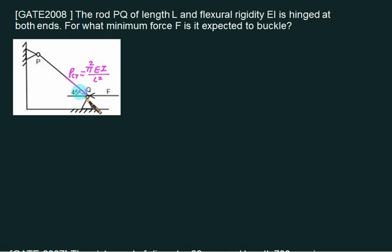The horizontal component of this one will be same as F. Is that component the cos component? So the value of F is simply Pcr multiplied by cos of 45, which is 1 by root 2. So this answer is pi squared EI divided by L squared root 2.